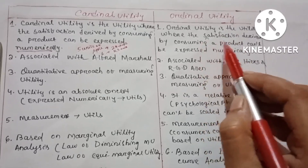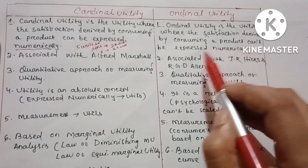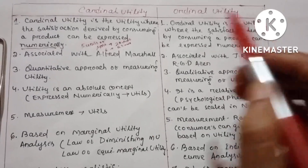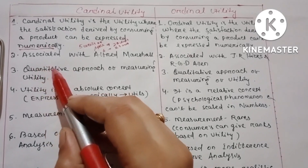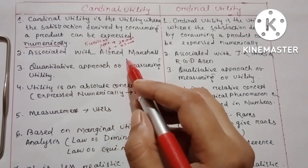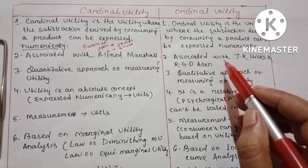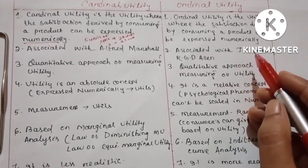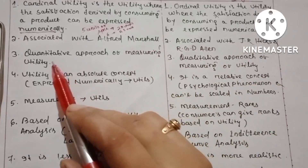Ordinal utility is where the satisfaction derived by consuming a product can't be expressed numerically. The concept of cardinal utility is associated with Alfred Marshall, and ordinal utility analysis is associated with J.R. Hicks and R.J.D. Allen.